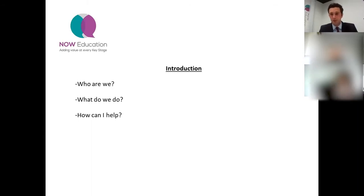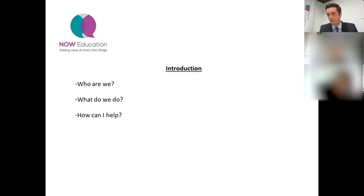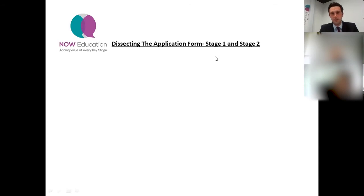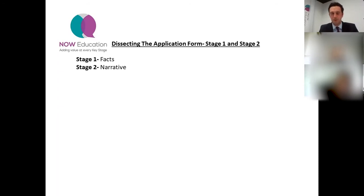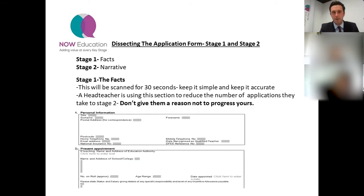Before I dive in, if you've got any questions please feel free to put your hand up partway through, or save them until the end - I've got a question section and time allowance for that. So we'll move on to the first part: we're going to break down the application form and make it as simple as we can. We're going to separate it into two parts - the facts, and what I like to call the narrative.